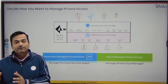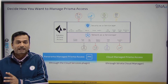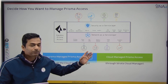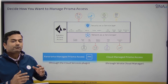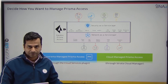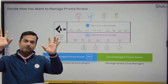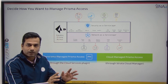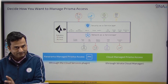Another way to configure or manage Prisma Access is through cloud-managed Prisma Access — nowadays we call it Strata Cloud Manager. You can think of it as Panorama hosted on the cloud. Through Strata Cloud Manager, you can manage your on-premises firewall as well as Prisma Access.